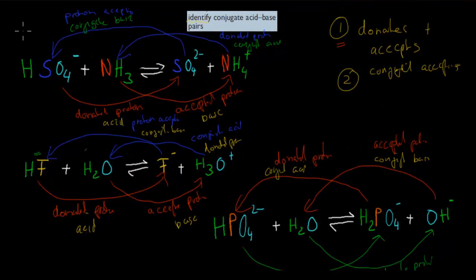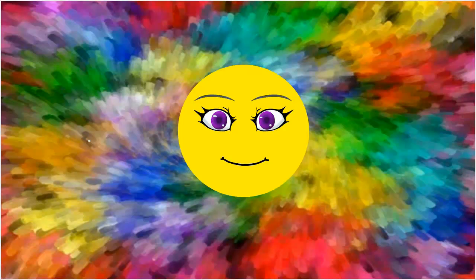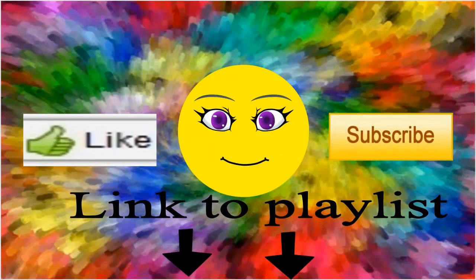So at this point, you should be able to tell which one is the acid and which one is the base by looking at which one is donating and which one is accepting protons. You should also be able to establish which one is the conjugate acid and which one is the conjugate base. Remember, the acid will always have a conjugate base, and the base will always have a conjugate acid. I hope that was useful. Thank you for watching.